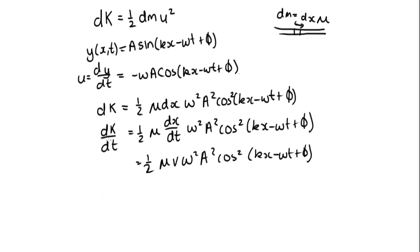To find the average value of dK/dt, we need the average value of cos squared, which is one-half. We can verify this by integrating: (1/2π) ∫₀²π cos²θ dθ = π/2π = 1/2.